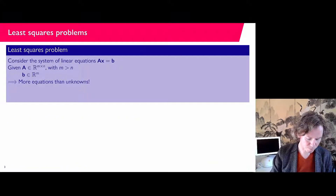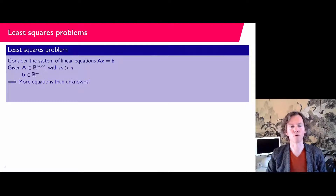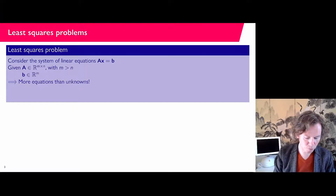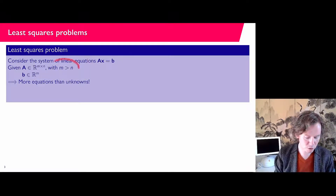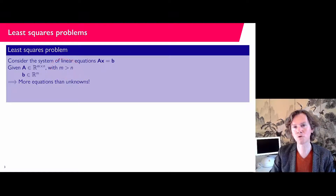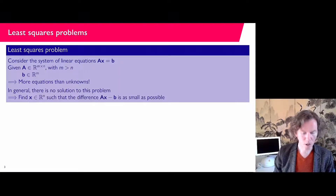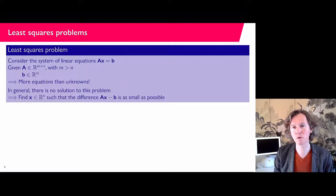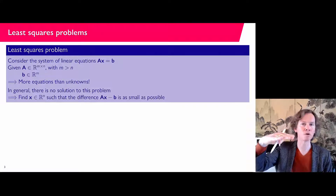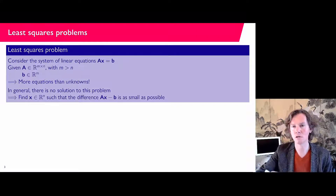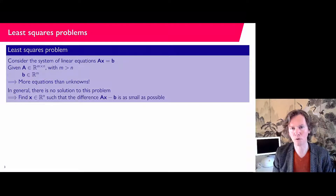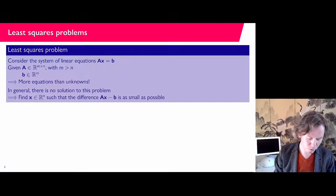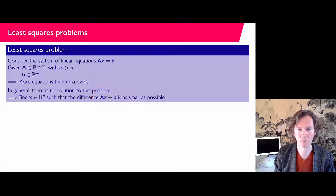We have a system of linear equations AX equals B, but our matrix is a non-square matrix — we assume it has more rows than columns, which means we have more equations than unknowns. In general there won't be a solution unless some of the equations are redundant. So in general, if you have more equations than unknowns you won't be able to satisfy all of them, and we will look at the residual AX minus B and try to minimize that in norm.